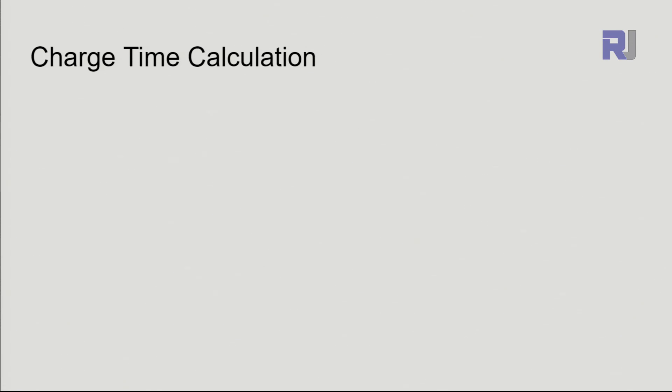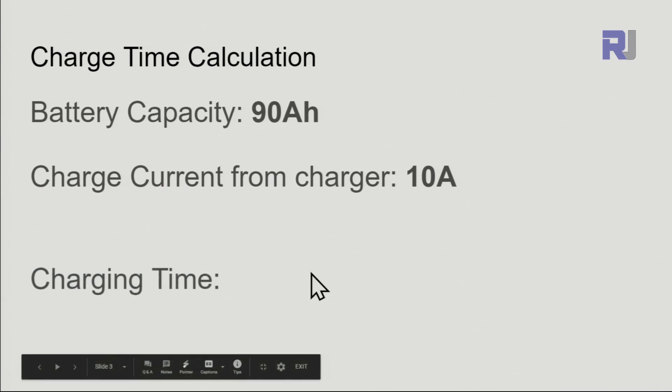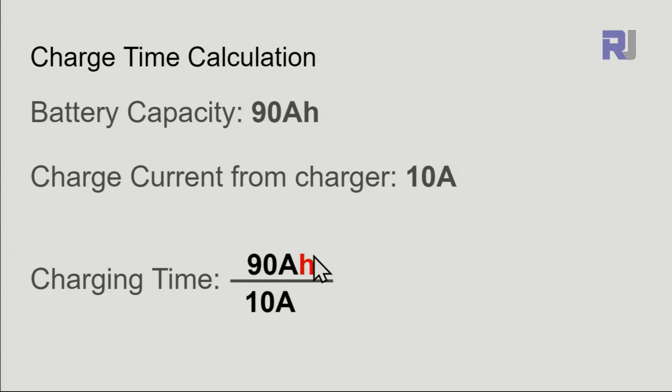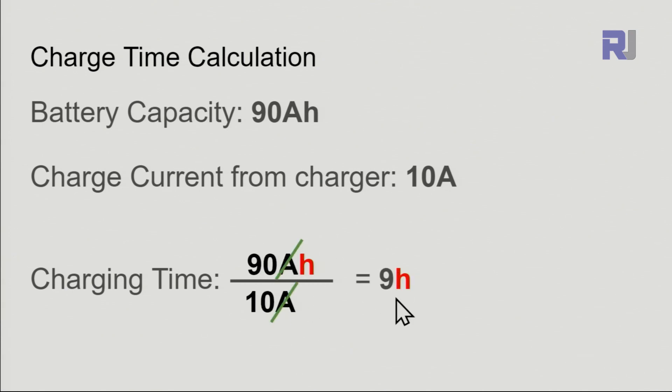Here is how we calculate charging time. Say you have a battery with capacity of 90 ampere-hour and your charger can charge at 10 ampere. The charging time is 90 ampere-hour divided by 10 ampere. Ampere cancels with ampere, so 90 divided by 10 equals 9 hours. In 9 hours your battery will be charged.